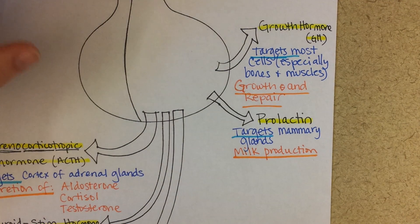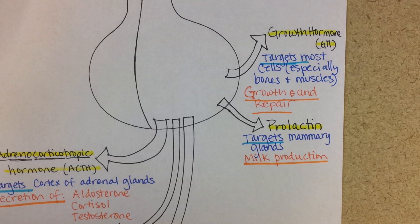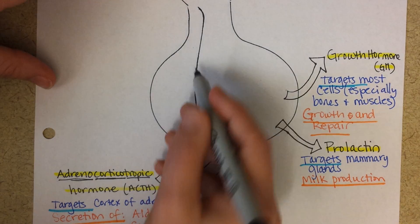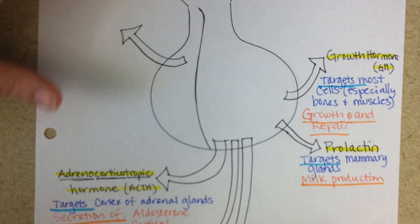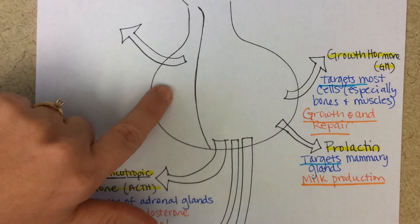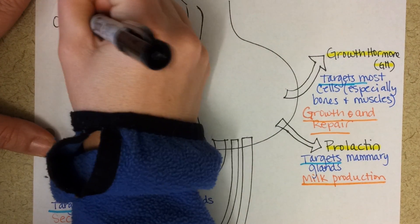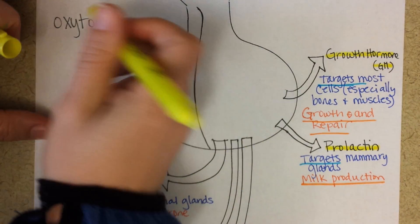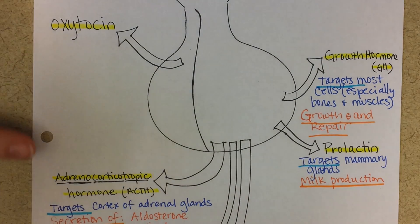Oxytocin is released from the posterior pituitary gland — the back part — not from the anterior. It is actually made in the hypothalamus, travels down along axons, and is stored in and released from the pituitary gland. Oxytocin is a very important hormone, essential for labor contractions, orgasm, and milk ejection.